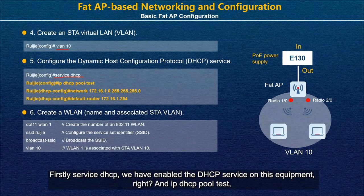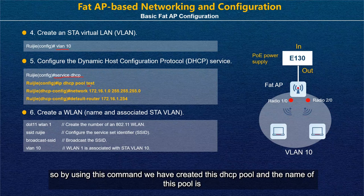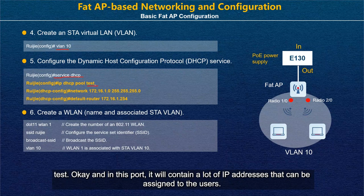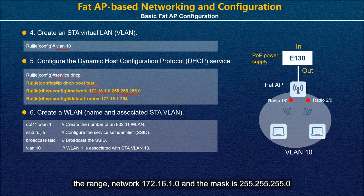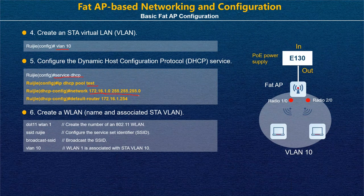Use 'IP DHCP pool test' to create a DHCP pool named 'test'. This pool contains IP addresses that can be assigned to users. Use the 'network' command to set the range: network 172.16.1.0 with mask 255.255.255.0, and the gateway is 172.16.1.254.